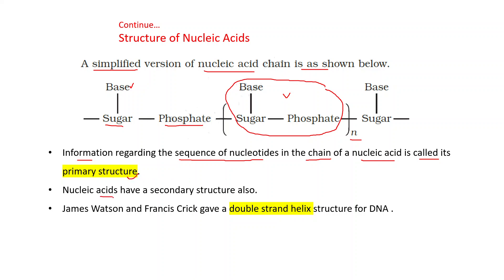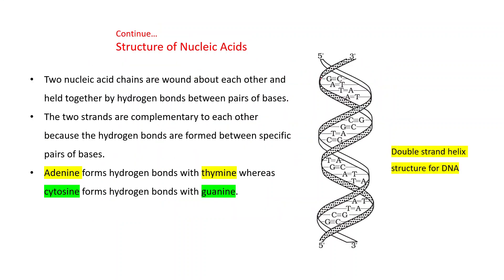Nucleic acids have a secondary structure also. James Watson and Francis Crick gave a double-stranded helix structure for DNA. Two nucleic acid chains are formed that are coiled about each other and held together by hydrogen bonds between pairs of bases.